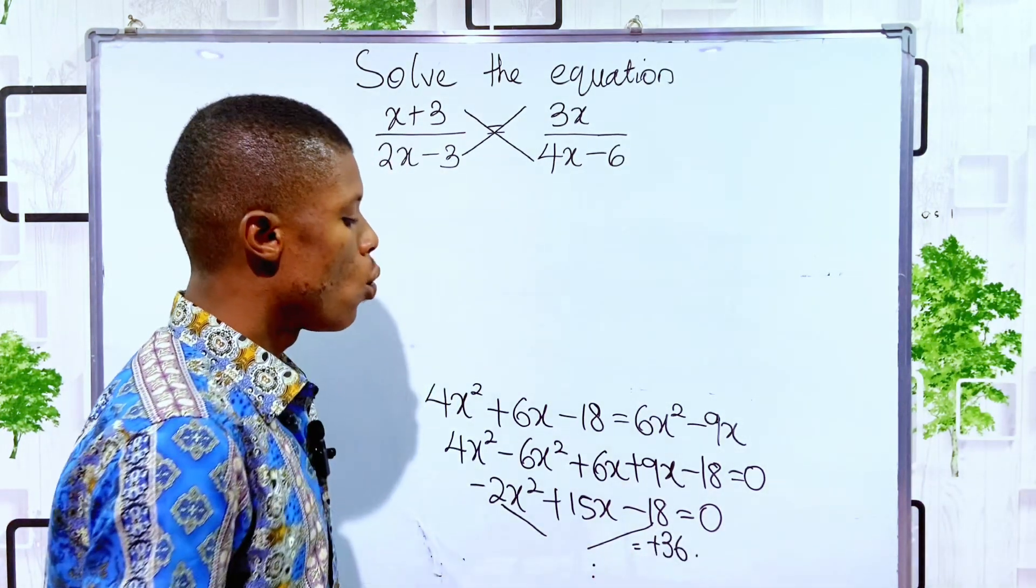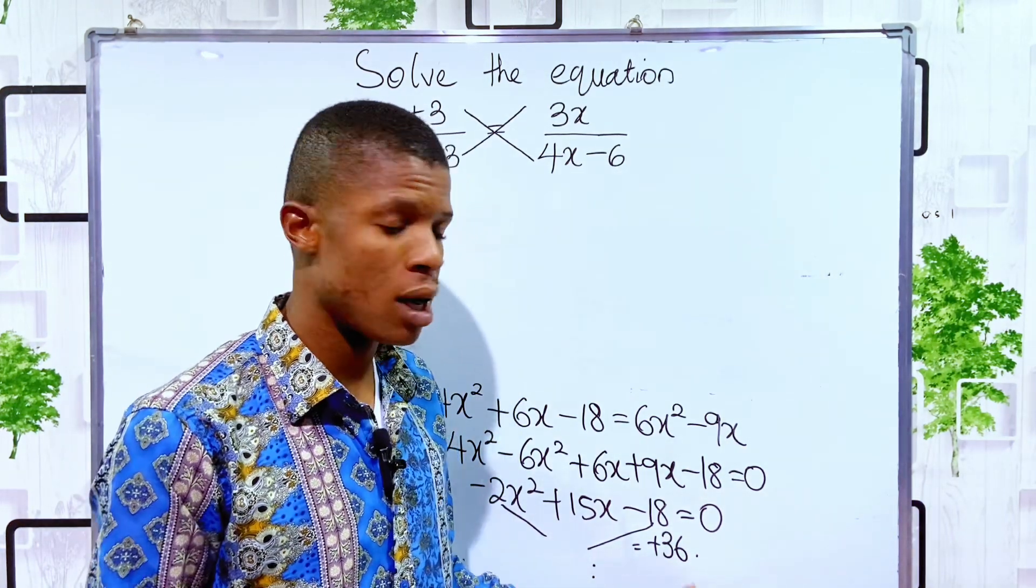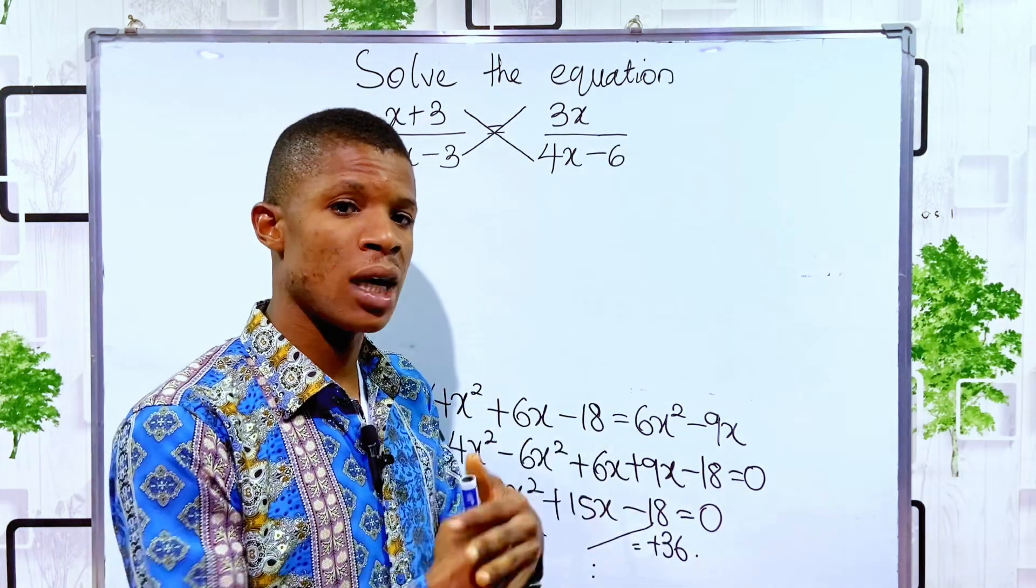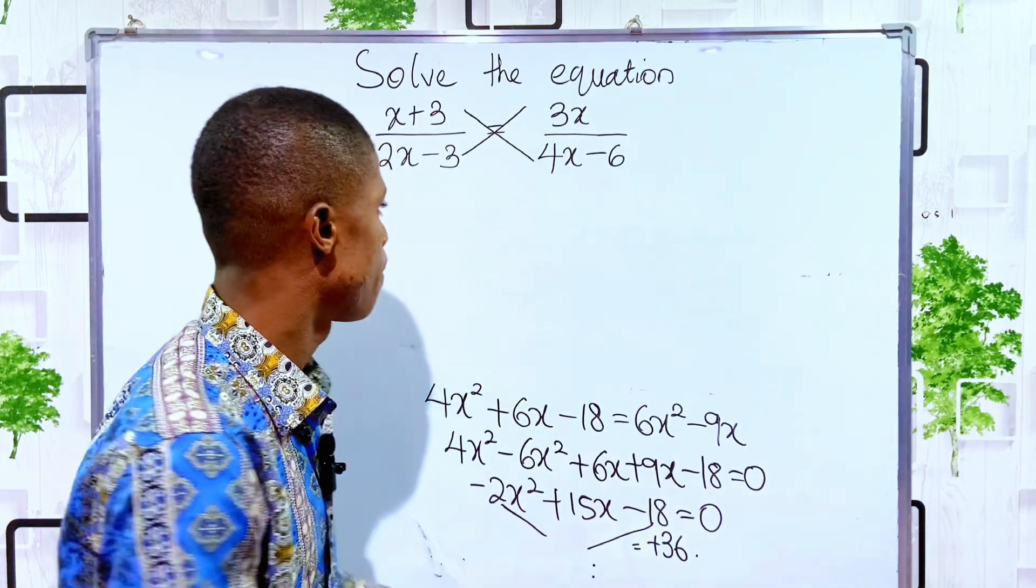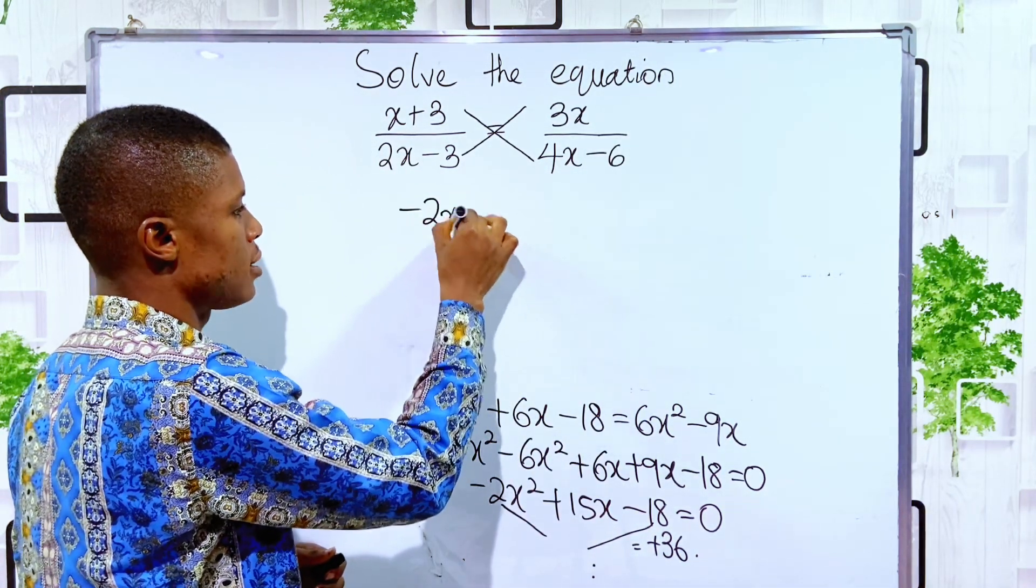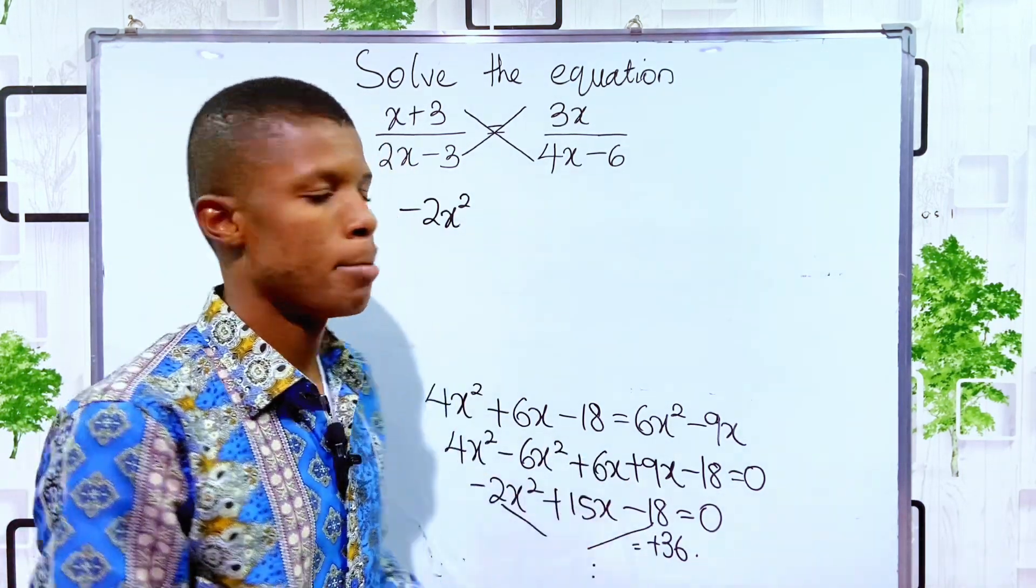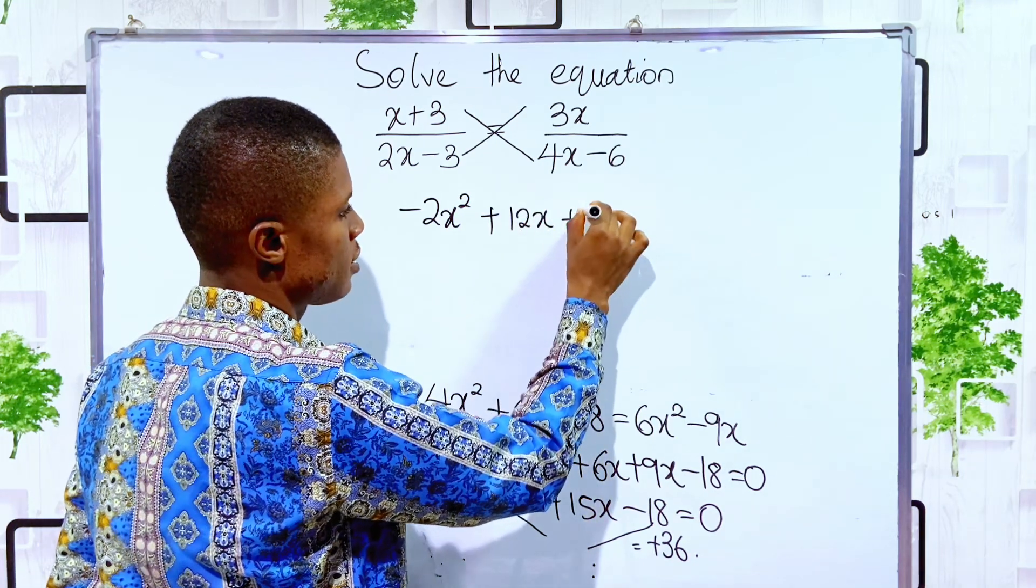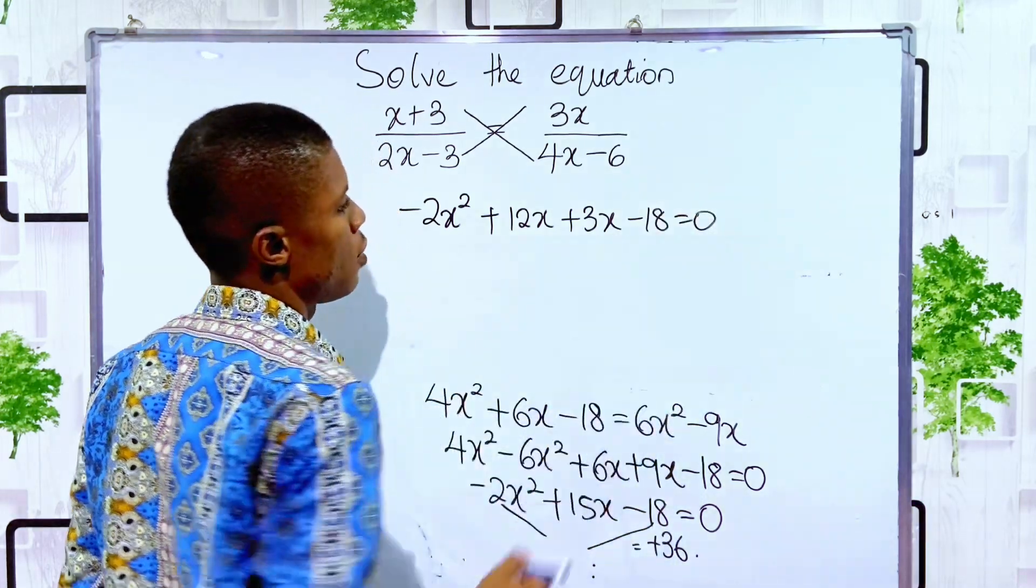So here, we think of two numbers that once you multiply them together, we get plus 36. And if you add them together, we should get 15, plus 15. So you can see we have minus 2x squared. Then the numbers are 12 and 3. Then, plus 12x plus 3x. Then, minus 18 is equal to 0.